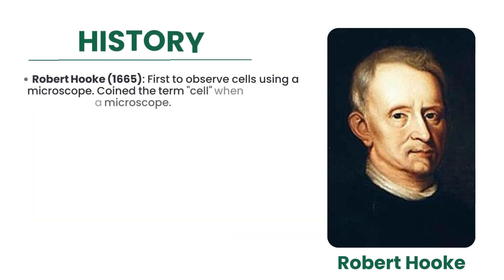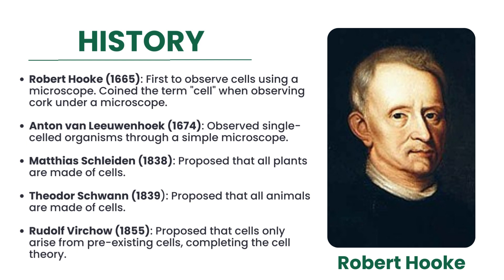The inception of cell theory can be traced back to significant contributions made by several pioneering scientists. In 1665, Robert Hooke became the first person to observe cells under a microscope using a thin slice of cork. He termed the structures he observed as cells, thus initiating the foundational concept of cell theory. Subsequently, in 1674, Anton van Leeuwenhoek expanded the understanding of cells by utilizing a simple microscope to observe single-celled microorganisms.